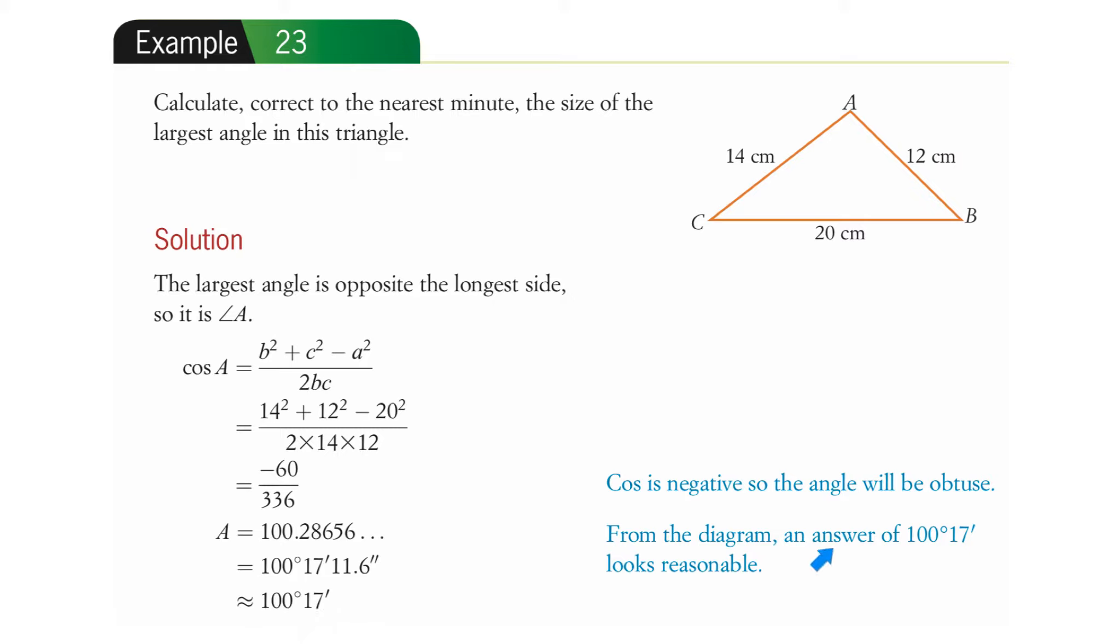And then again, they've got this little note from the diagram. An answer of 100 degrees looks reasonable. Okay. Well, it looks like a right angle, but it's around 90, right? So it's 100. So it does look reasonable.